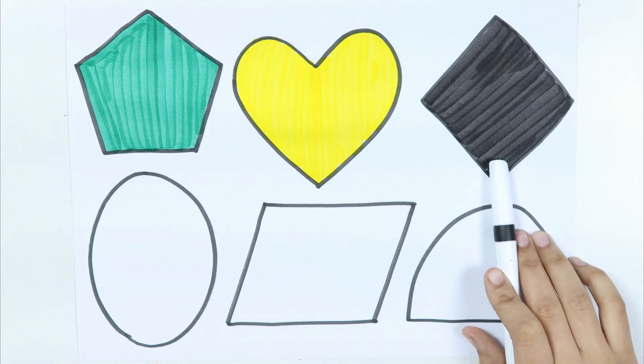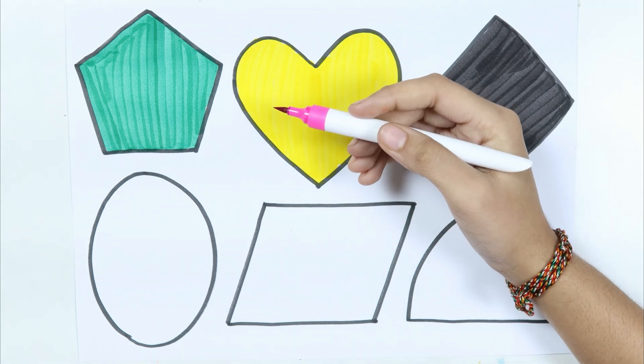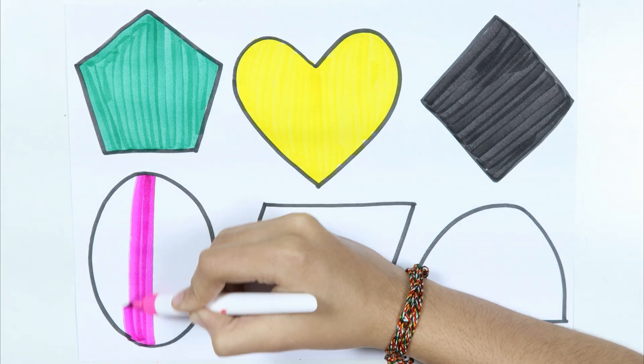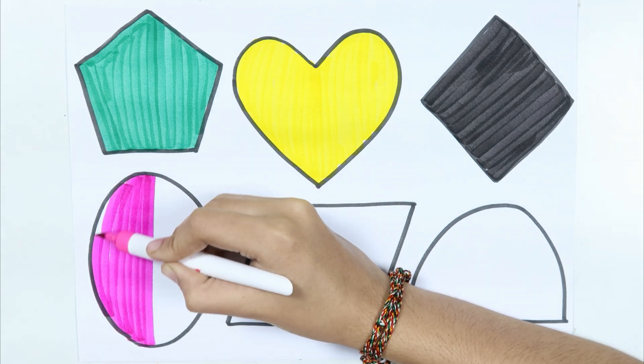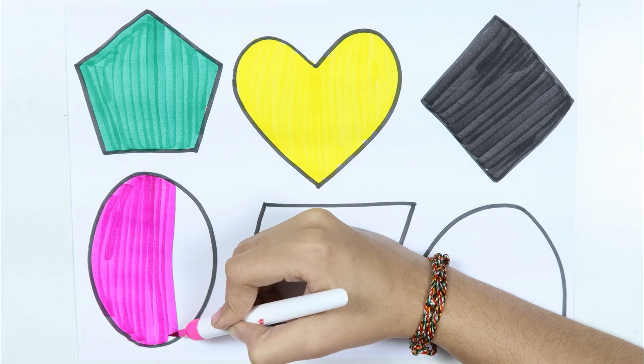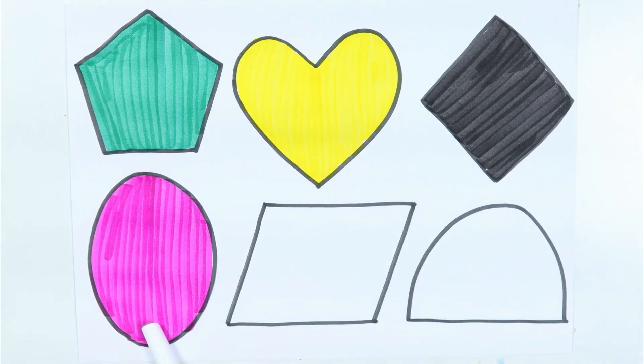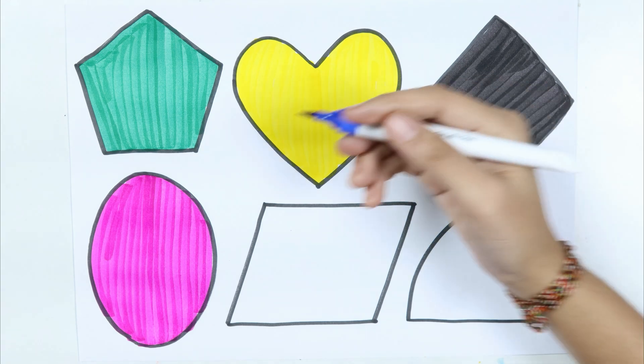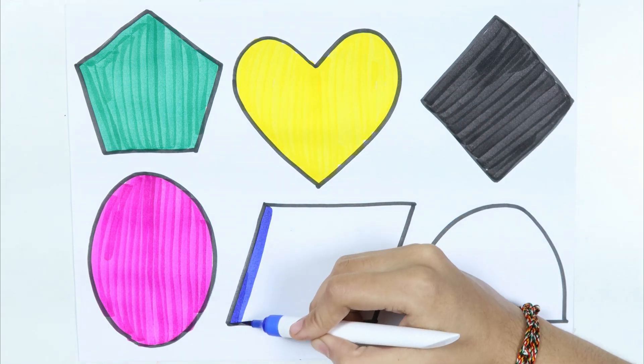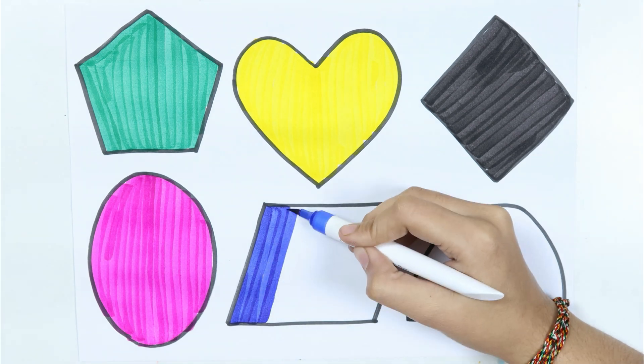Rhombus. Pink color. How I wonder what you are. Up above the world so high. Ellipse. Blue color. Like a diamond in the sky.